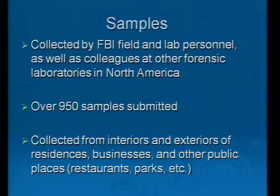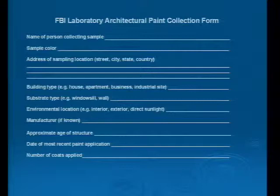This was our sample collection form that we sent out requesting samples. The information we asked for was quite similar to what Tippett had looked for 40 years ago. We wanted to know the sample color, the geographic location, what type of building it was on, whether it was a house or a business, whether it was on a windowsill or a wall as its substrate, any environmental conditions, whether it was an interior or exterior finish, whether it was in direct sunlight, the manufacturer if known, the approximate age of the structure, the date of its most recent paint application, and the number of coats applied.